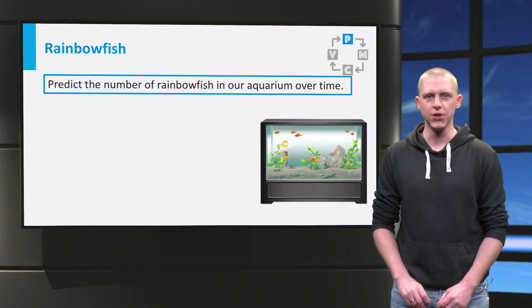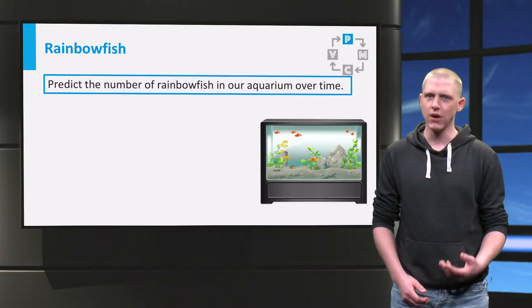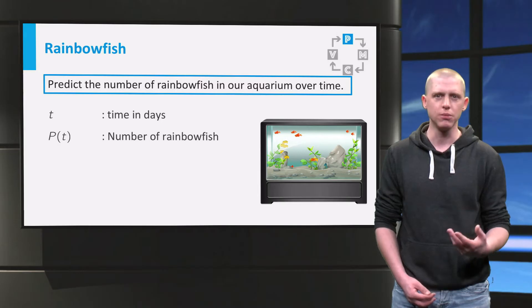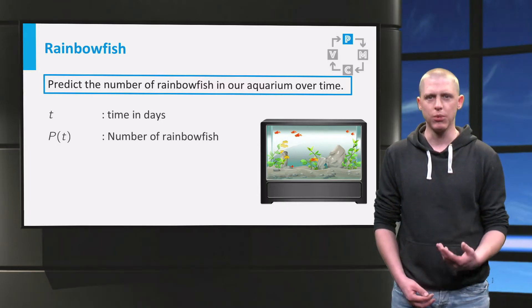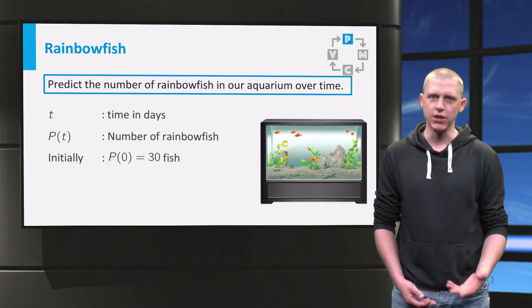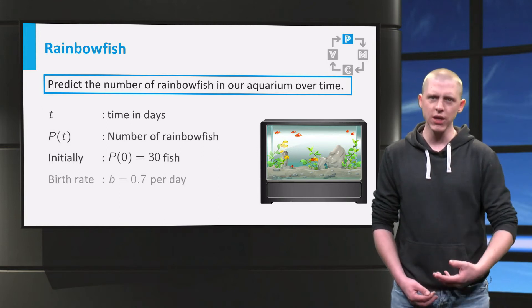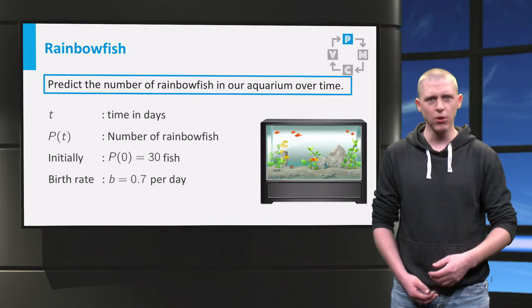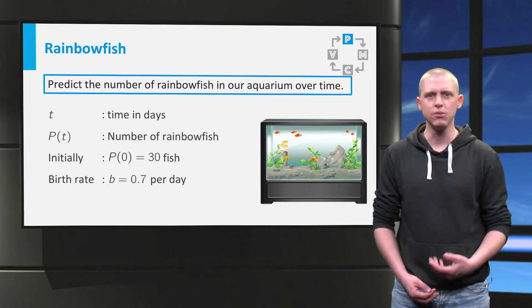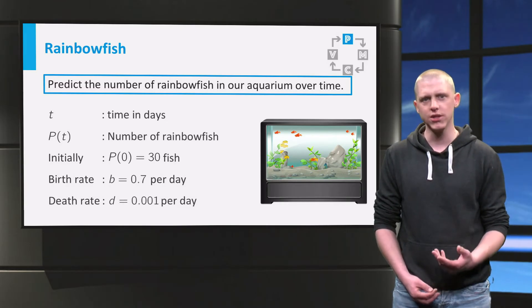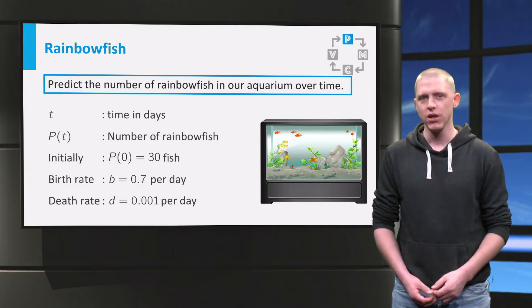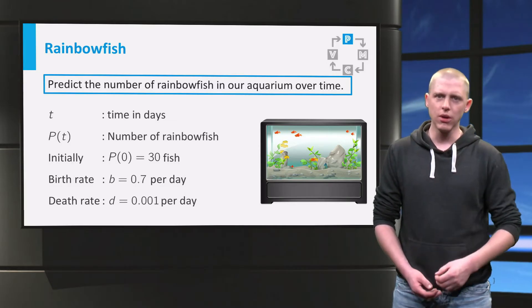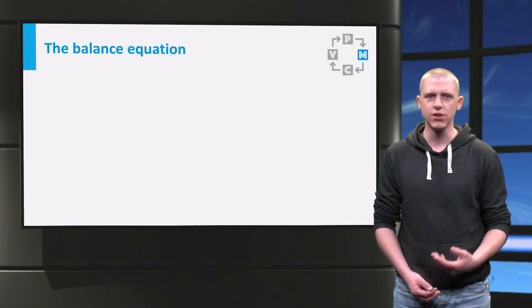Let's first review the information we found on rainbow fish. We define the number of rainbow fish, the population size, at some time t in days as the function P. We start with a population of 30 fish, so P equals 30. We estimated the number of baby fish born each day per rainbow fish as 0.7 per day and named this the constant b. For this first model we estimated that the death rate of the rainbow fish is 0.001 per day. We are now going to look at how P, the population size, changes over time.